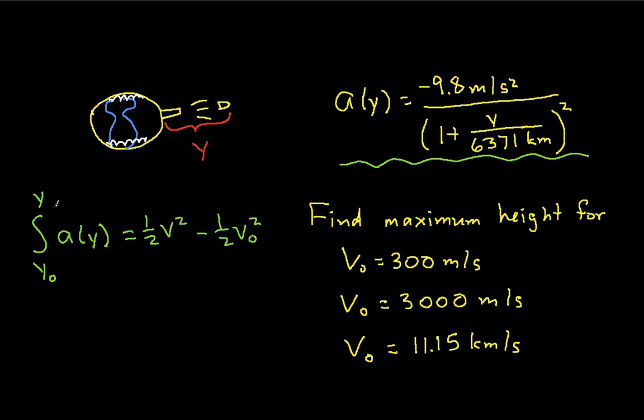Okay, so this would be the position at a given time. This would be the velocity at that same time. This is the initial velocity, and this is the initial position at time zero.